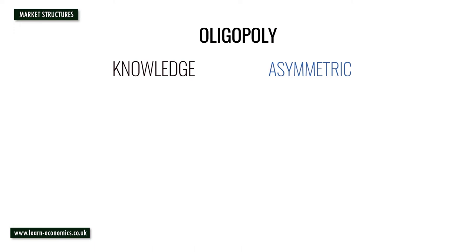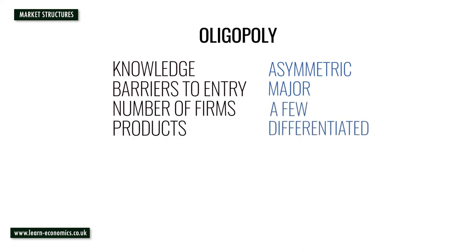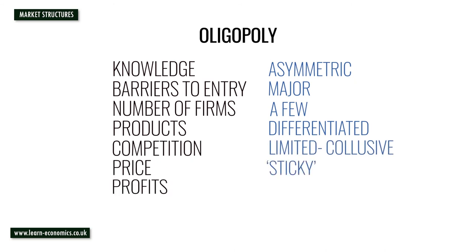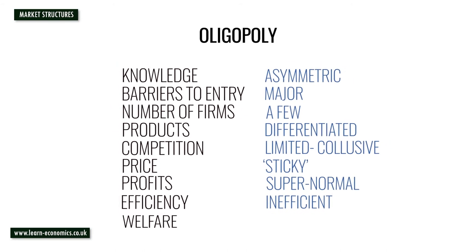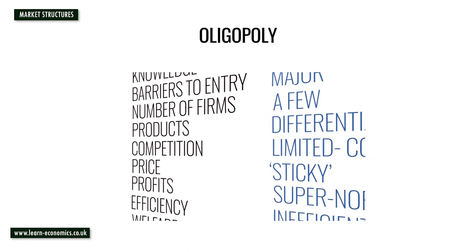For duopoly and oligopoly, knowledge is only partial and not symmetrical, with firms able to control information. Major barriers to entry exist. There are just a few interdependent firms. Products may be differentiated. Firms may engage in collusion. Price tends to remain sticky. Supernormal profits are likely. Firms are not allocatively or productively efficient, and there is a welfare loss as price is greater than marginal cost.